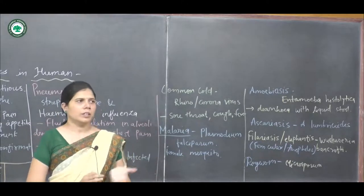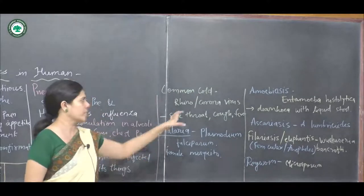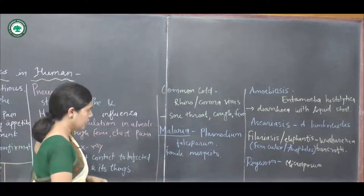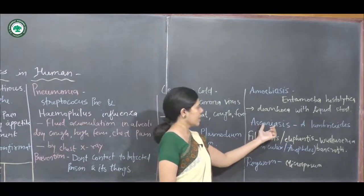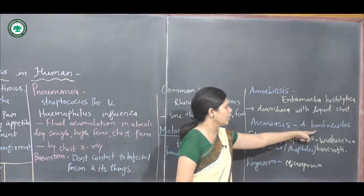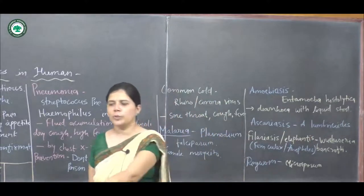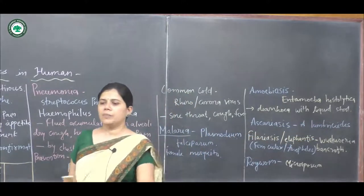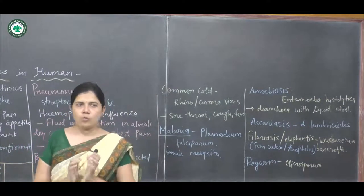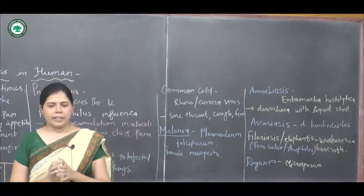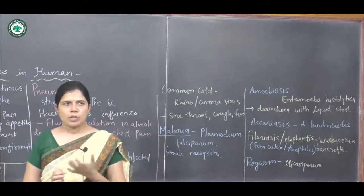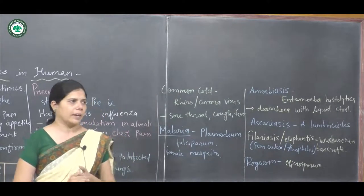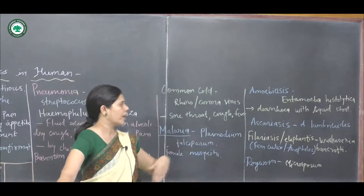The next disease is Ascariasis, caused by Ascaris lumbricoides, the pathogen found in the human intestine. It is a roundworm nearly 40 centimeters in length. It is a highly infectious worm causing vomiting, malnutrition, intestinal obstruction, and intestinal pain.